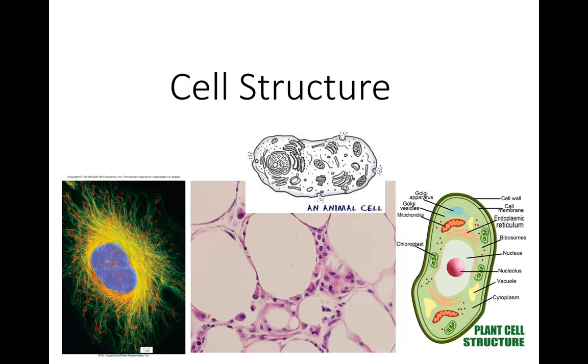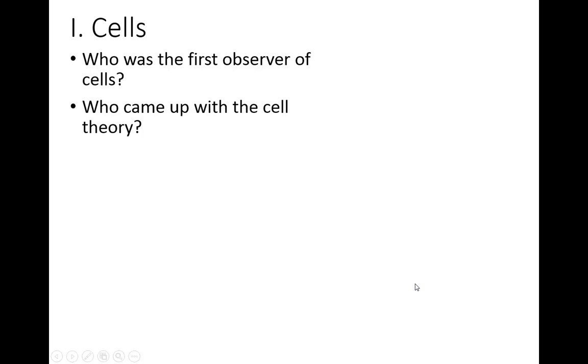All right. So we are going to go over cell structure. There are, of course, all living things are made out of cells, but we have different types of cells, depending on whether you're a single-celled organism like this one here on the left, or an animal cell, or if you're multicellular. This is a cell in lung tissue, so there's multiple different cells all combined together. Plant cells also have different structures within them as well. So we're going to go over the different types of cells and what are in them.